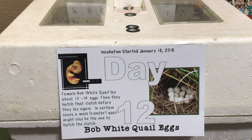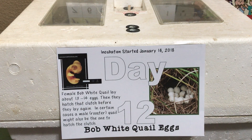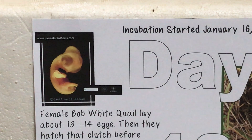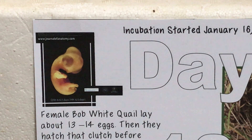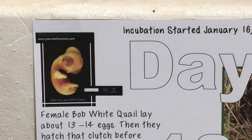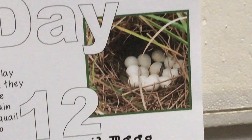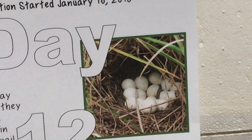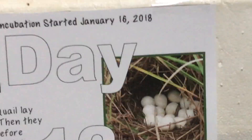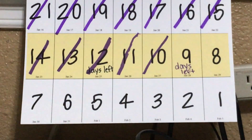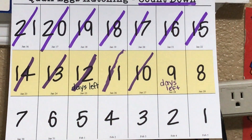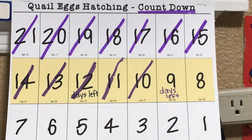In certain cases, a male or rooster quail might also be the one to hatch a clutch, depending on different circumstances in the wild. Here is what our baby quail look like inside their eggs today — that's what a quail embryo looks like on day 12. And here is a picture of a bobwhite quail nest of eggs out in the wild.